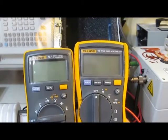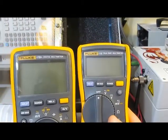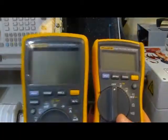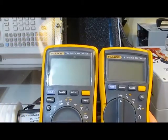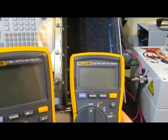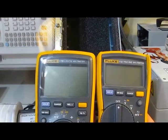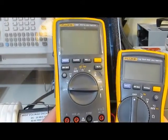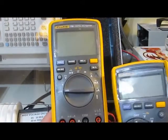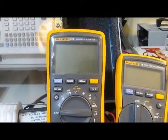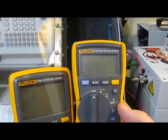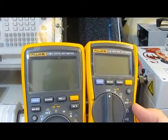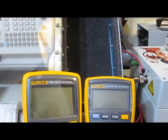These are both again very robust meters. The 115 is a six thousand count meter. The 17B plus is a four thousand count meter. The 115 is true RMS. The 17B plus is not. This, the 115, has a bar graph feature. The 17B plus does not. So the advantage that you're getting with this 17B plus is really that you can measure down into the microamps and milliamp ranges. And the 17B plus also has a temperature input. So the cost of the 115 is 132 dollars versus the 17B plus at 156 dollars.